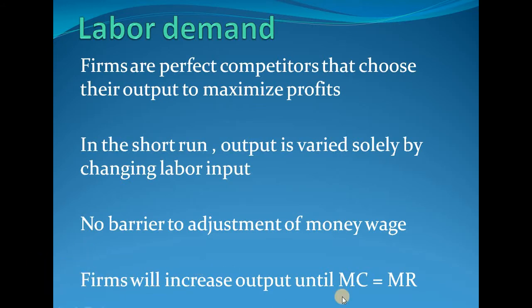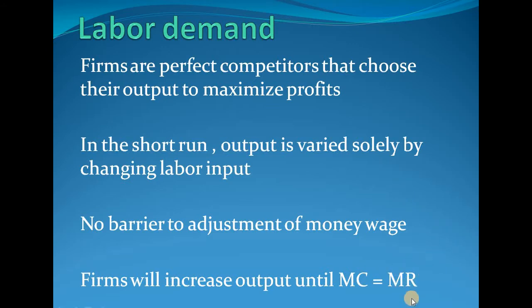The fourth assumption — which is new — is that firms will increase output until marginal cost equals marginal revenue. Marginal cost is any additional cost incurred by hiring an additional worker. Marginal revenue is the addition to revenue obtained by selling one more unit of output. Firms maximize profit when marginal revenue equals marginal cost.